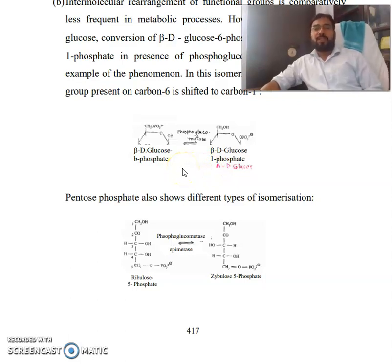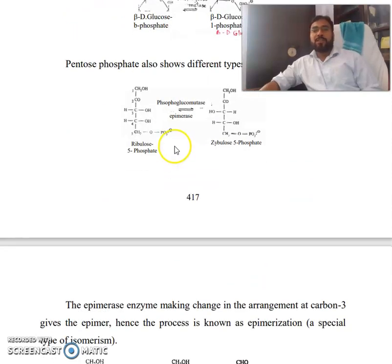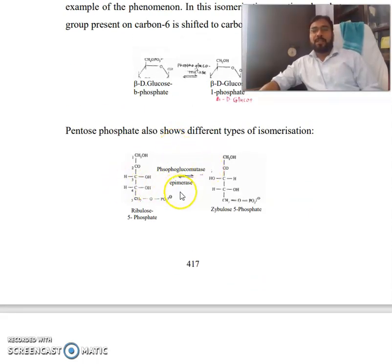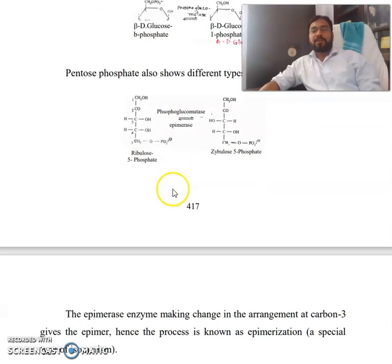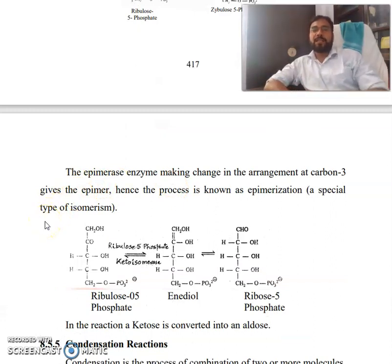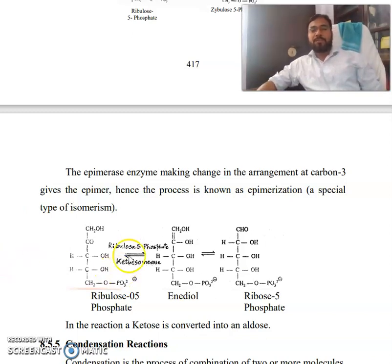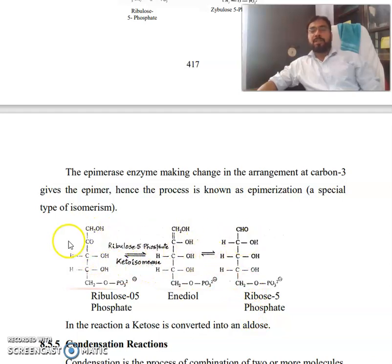So pentose phosphate also shows different types of isomerizations. Look at this example — epimerase converts ribose-5-phosphate to xylulose-5-phosphate. This is the phosphoglucose epimerase enzyme. The epimerase enzyme makes a change in the arrangement of carbon-3 to give the epimer. Hence the process is known as epimerization, a special type of isomerism. You can see ribose-5-phosphate in diol — the structure changes to give xylulose-5-phosphate. See the differences in the structure.